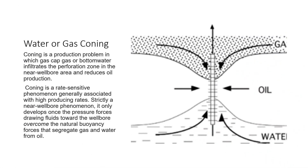Water or gas coning is a production problem in which gas cap gas or bottom water infiltrates the perforation zone in the near-wellbore area and reduces oil production. Coning is a rate-sensitive phenomenon generally associated with high producing rates. It is strictly a near-wellbore phenomenon — it only develops once the pressure forces drawing fluids towards the wellbore overcome the natural forces that segregate gas and water from oil.